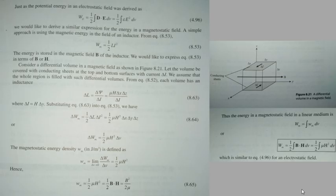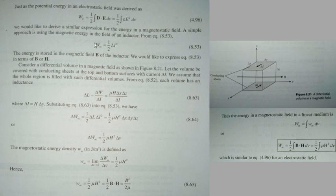In the case of electrostatic field, there is a potential energy expression: w equal to half epsilon E square. We have derived it. In the case of magnetic energy, the expression is w equal to half L I square.